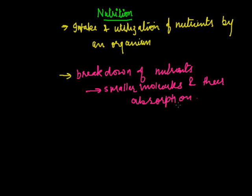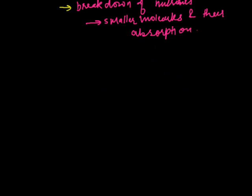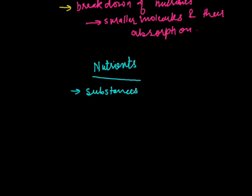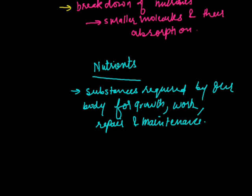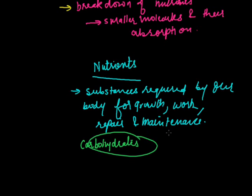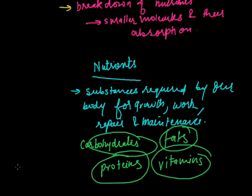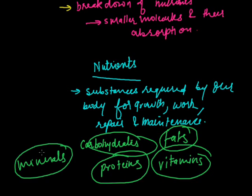Now let me talk about the different kinds of nutrients. These are substances required by our body for growth, work, repair, and maintenance. Different kinds of nutrients are carbohydrates, fats, proteins, vitamins, minerals, etc. These are the major nutrients.